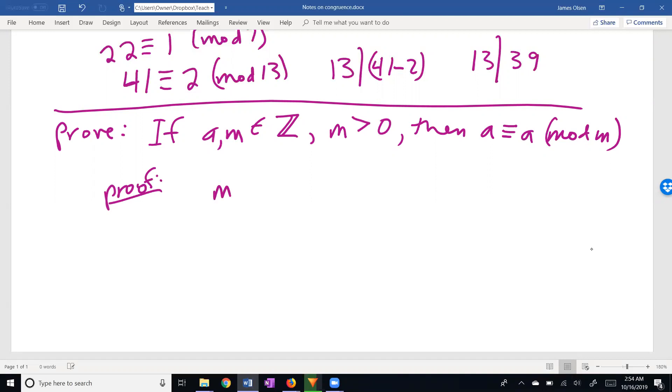We start out all proofs by making the statement that we are making a proof. If M divides 0, any number divides 0, because M times 0 equals 0. But 0 is A minus A, so M divides A minus A.